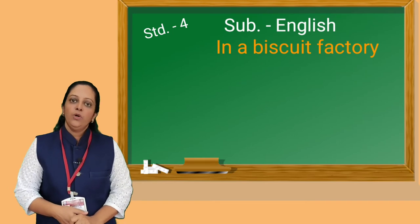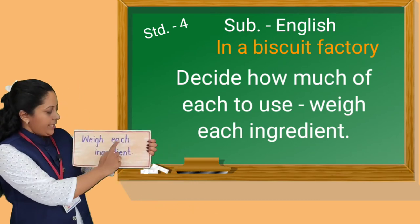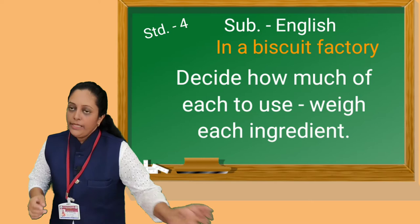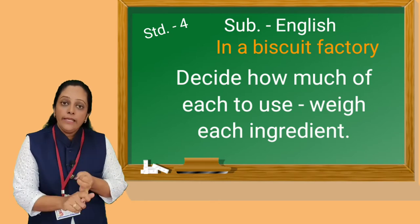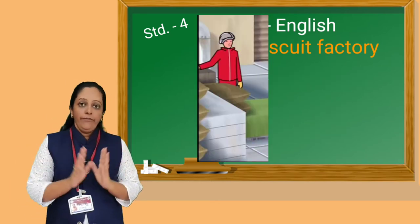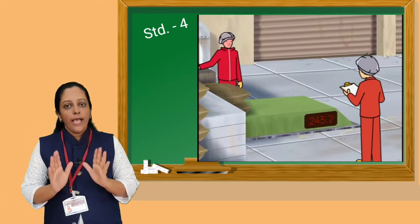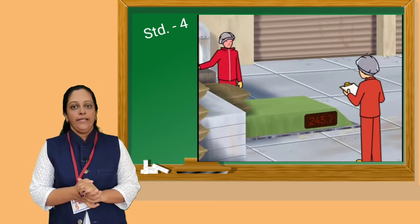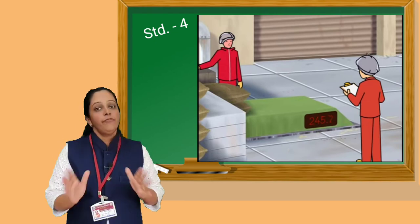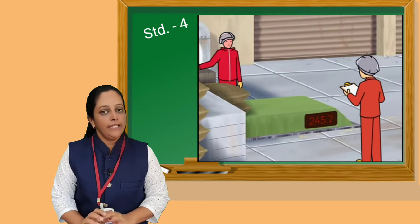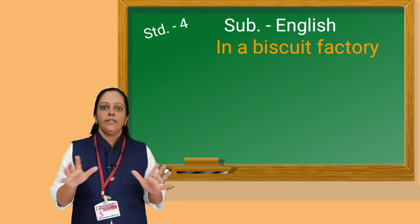So let's move to another step. Our next step is: Weigh each ingredient. In the process of making biscuits, we first get the recipe, then we get all the ingredients, and then we have to weigh all the ingredients — means we have to measure all the ingredients and decide the weight of each one. If we have the perfect measurement of ingredients, the food items become tasty. So it is very important to weigh all ingredients.